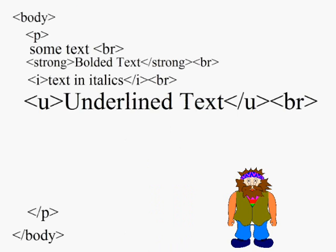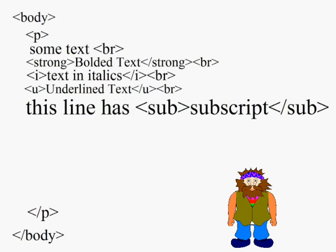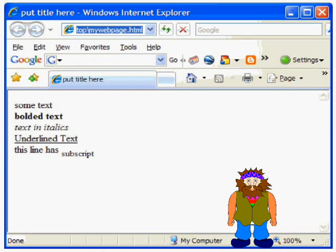Pretty cool, isn't it? So we'll put in another page break and add in another line of text with some subscript. The subscript tags, which are the tags with the letters S, U, and B in them, tell the text in between them to display slightly smaller and lower in the browser, like this.